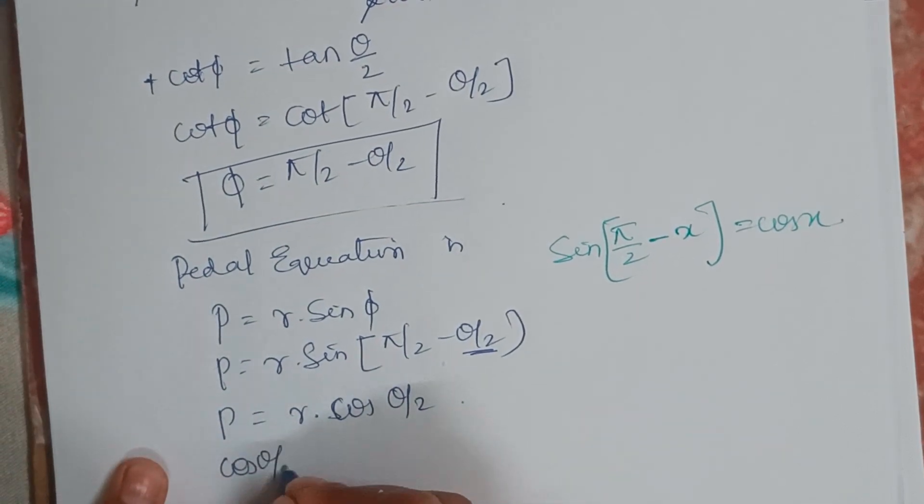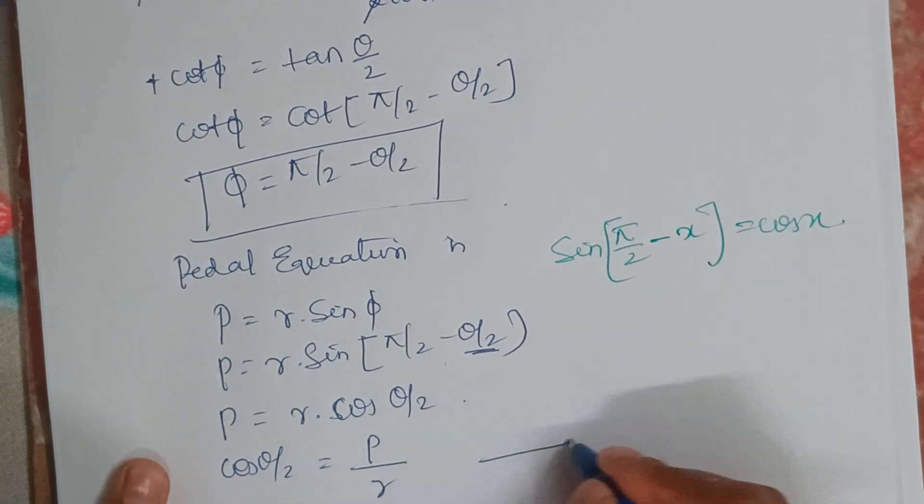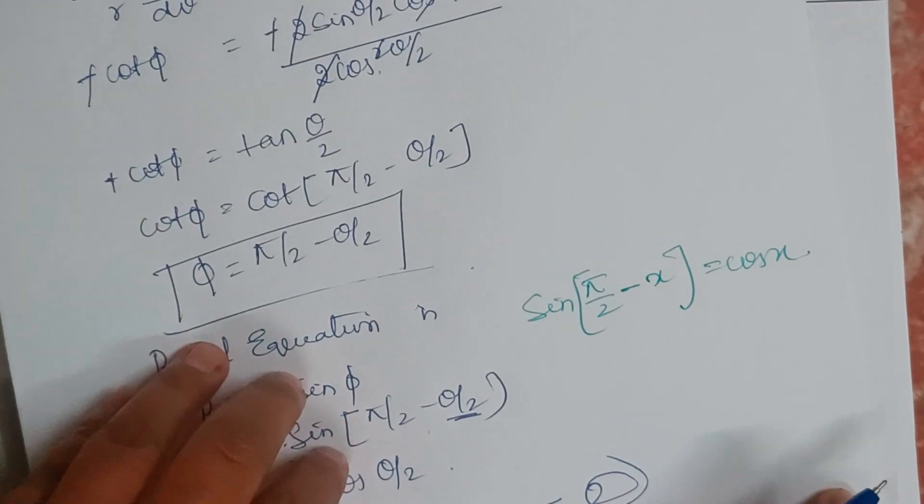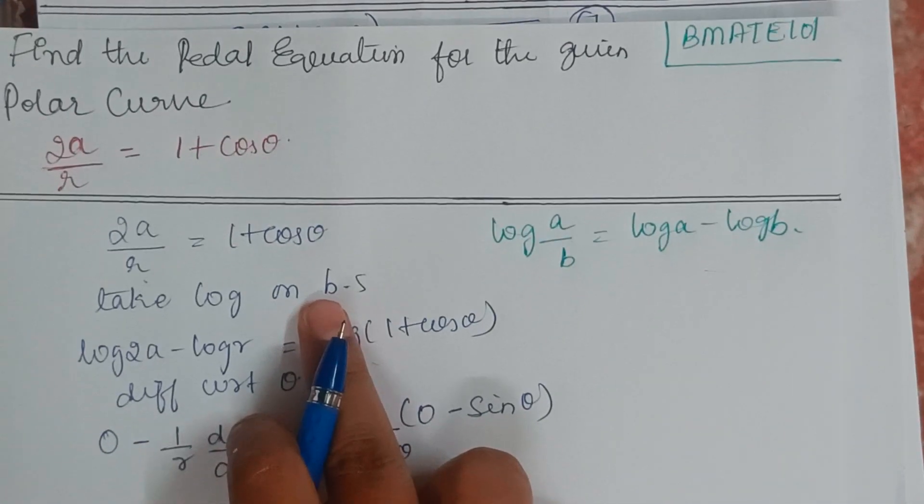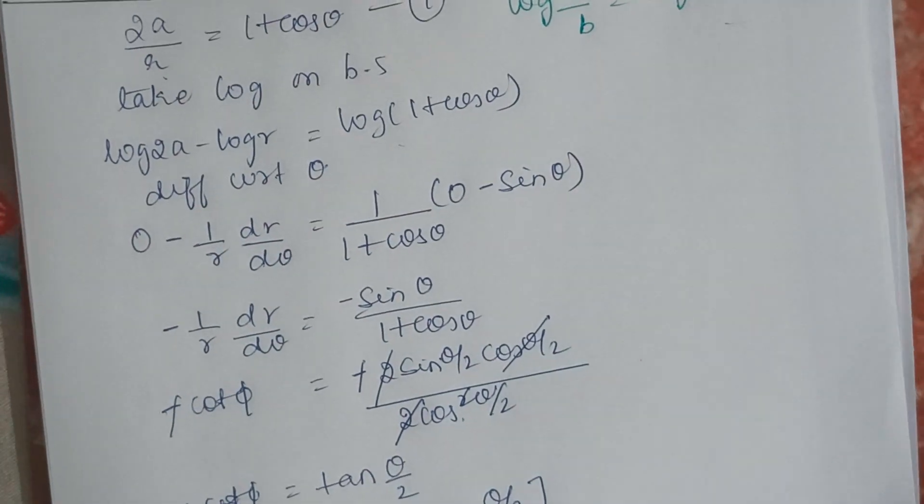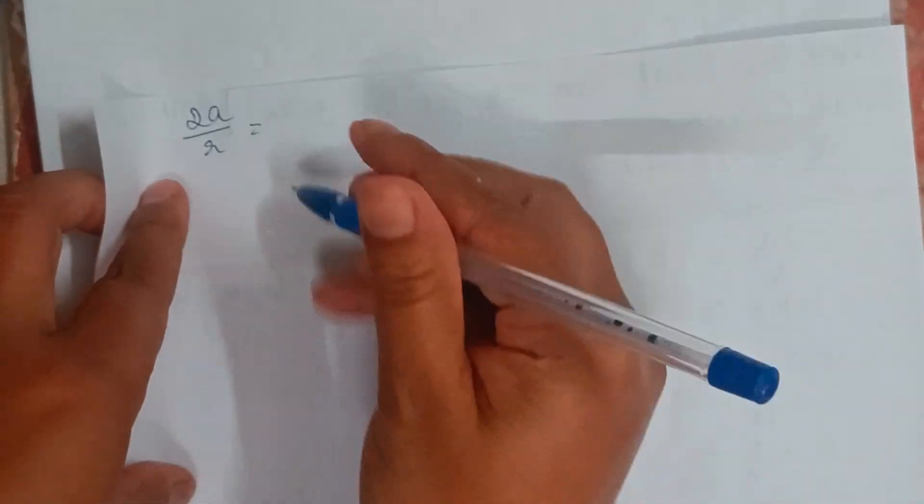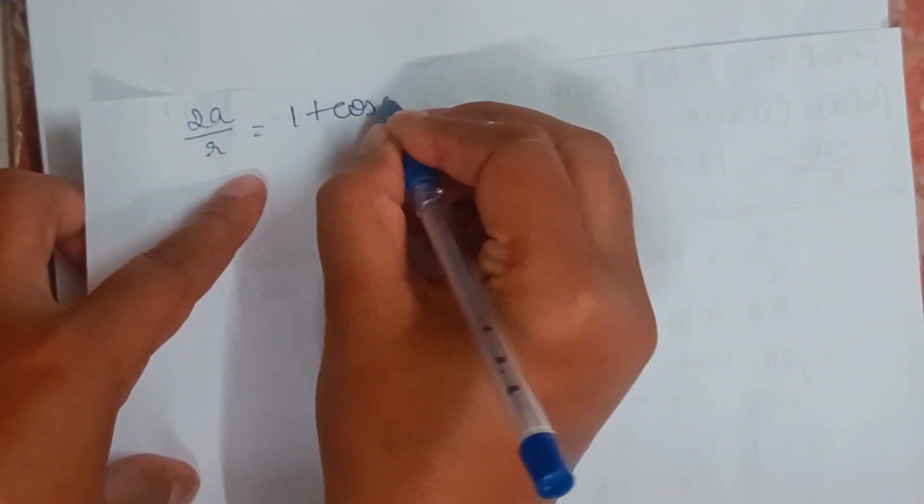So cos theta by 2, I can write it as P by R. Let me take this as equation 2. And the question, this question as equation 1. So I will write the question here, that equation 2A by R equals 1 plus cos theta.